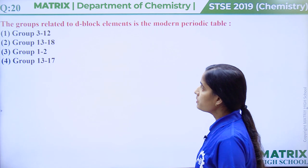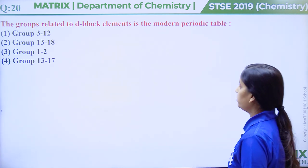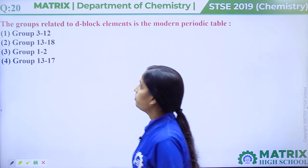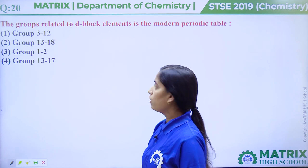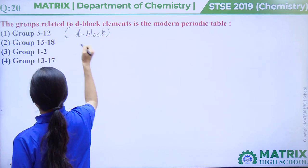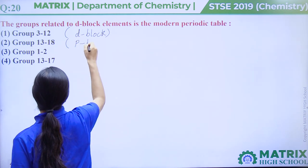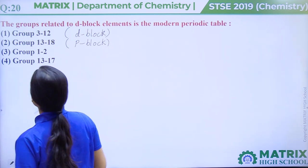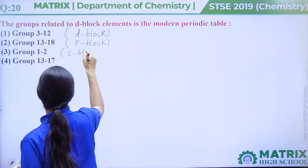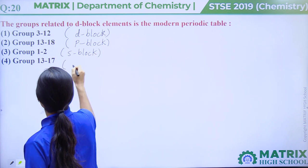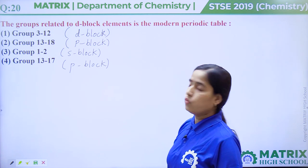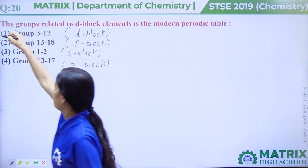Question number 20: The groups related to d-block elements are. In the modern periodic table, groups 3 to 12 indicate the d-block elements. Groups 13 to 18 indicate the p-block, and groups 1 and 2 indicate the s-block. So the correct answer is option number 1, group 3 to 12.